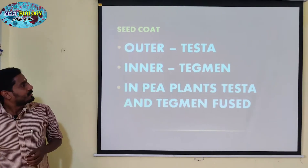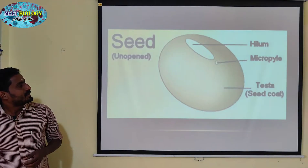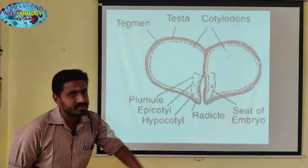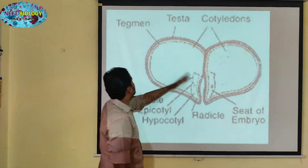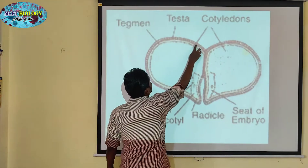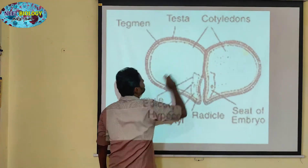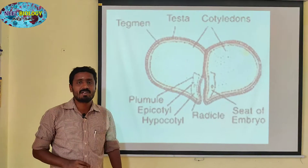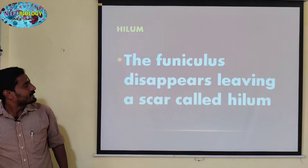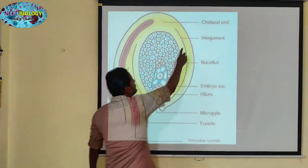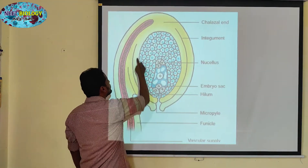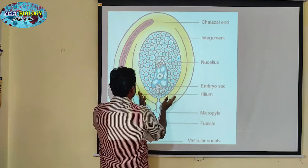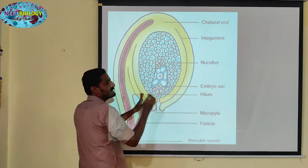Next, you can see the seed coat. You can see the outer testa and the tegmen. This is the longitudinal section. In this longitudinal section, you can see the outer region. In the inner region, you can see the tegmen. You can see the integuments — there are 2 integuments. This is the Outer Integument. The outer seed coat is what the testa is.